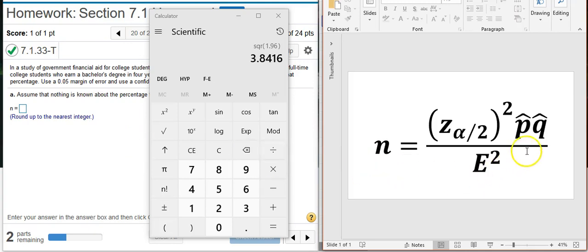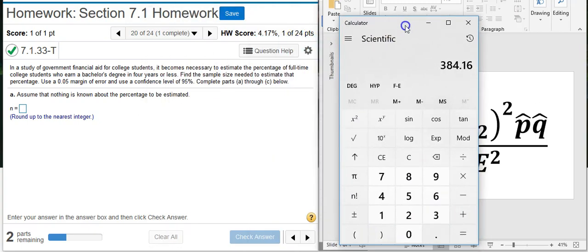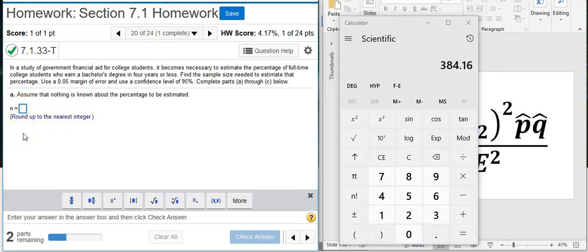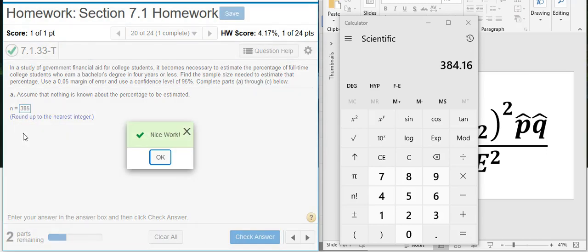So I multiply this by 0.25, and then I'm going to divide by the square of my margin of error, which here in the problem statement is 0.05. So divided by 0.05 squared. And now I get 384.16. I'm instructed here to round up to the nearest integer. So that's going to give me 385. Nice work!